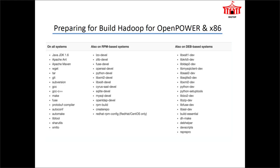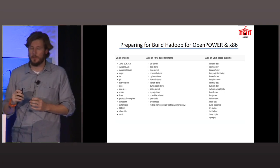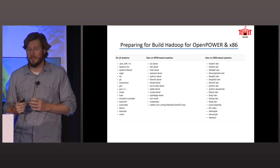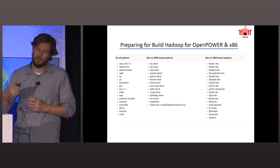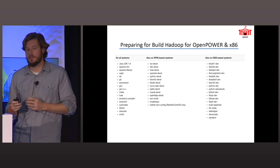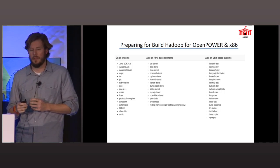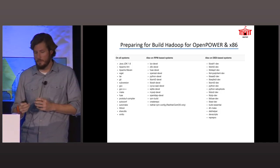Big Top's repo itself comes self-contained with everything you need. It prescribes a list of packages that the components will depend on, and everything else is in the source tree. So you can just clone one of the release branches and start building away.